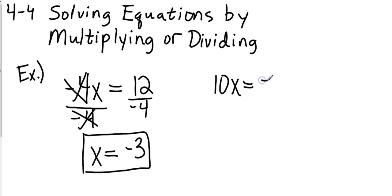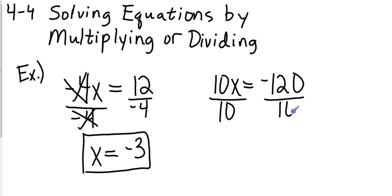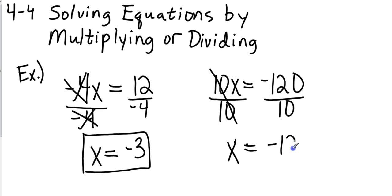Example number two. Again, it looks the same. The 10 and the x are multiplying by each other. So the opposite of multiplication is division. To balance both sides, I'm going to divide both sides by 10 because, in equations, whatever I do to one side I have to do to the other side. So my 10s will cancel, leaving me x equals negative 120 divided by 10, which is going to end up being negative 12.